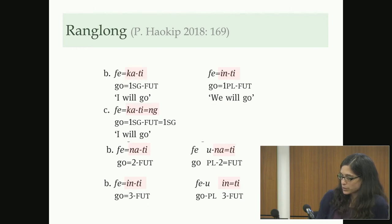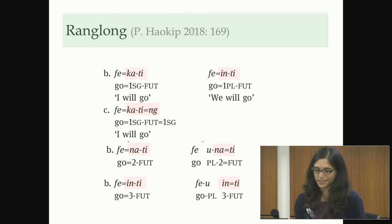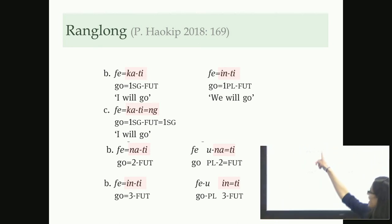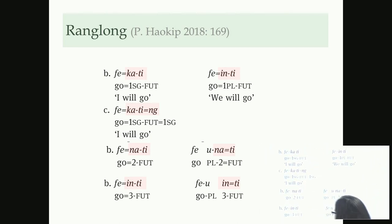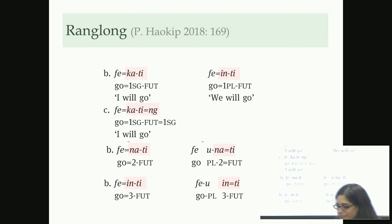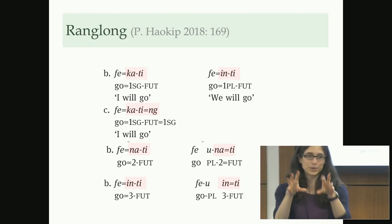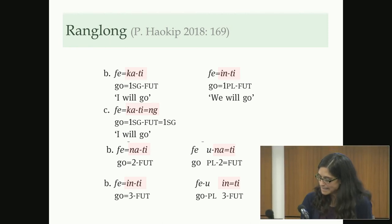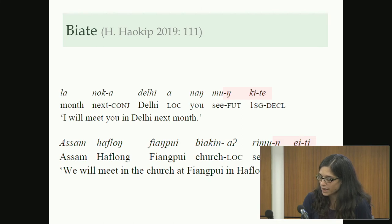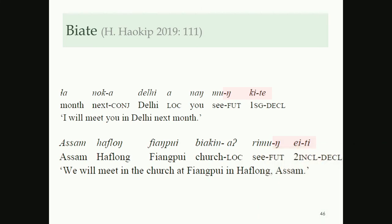In Ranglong we also have a kind of full set, with interesting double indexation: both the pre-verbal 'k' and the final marker appear. Pautang notes this form is used when somebody really wants to state with high confidence their intention to go — then you put the first person singular marker there twice. In Biate we see the same construction again, and again with a velar nasal remnant on the lexical verb, so that does seem to be part of the original construction.